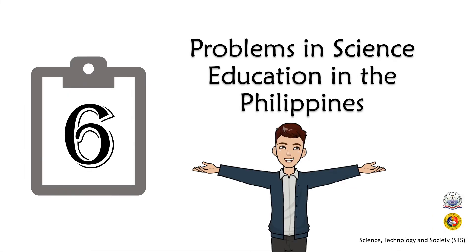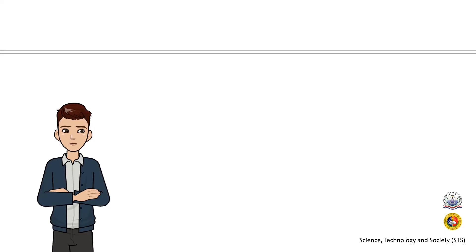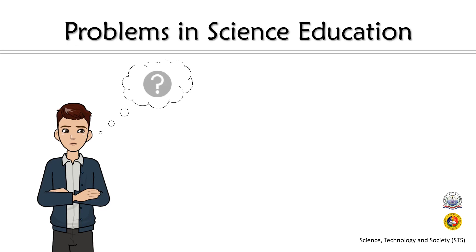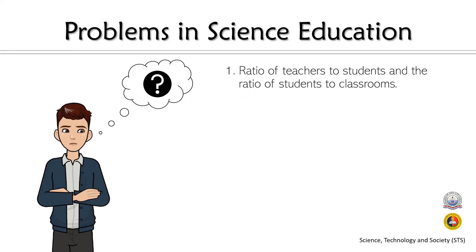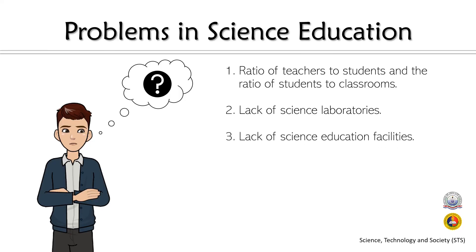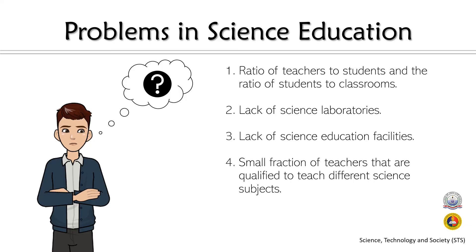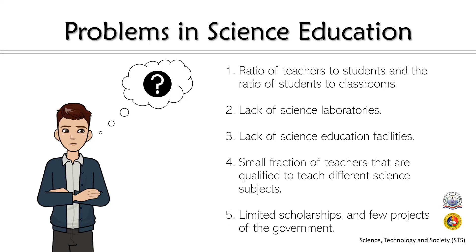Our last topic is the problems in science education in the Philippines. Despite its importance, there are problems encountered. These include: the ratio of teachers to students and students to classrooms, lack of science laboratories, lack of science education facilities, a small fraction of teachers qualified to teach different science subjects, and limited scholarships and few government projects.